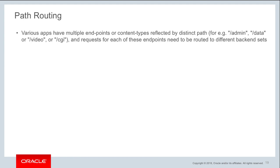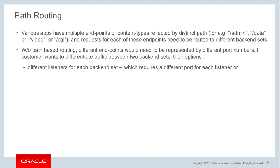Another feature for request routing is path routing. In many situations, applications serve different types of content differentiated by distinct URL paths, and the load balancer needs to route each path's traffic to a different backend server. Without path-based routing, the workarounds are to create different listeners each on a different port routing to different backend sets, or to create separate load balancers for each type of content.